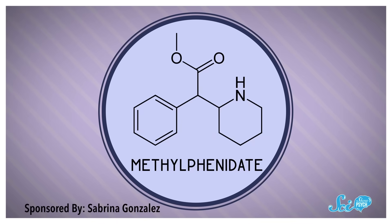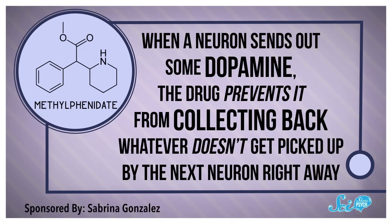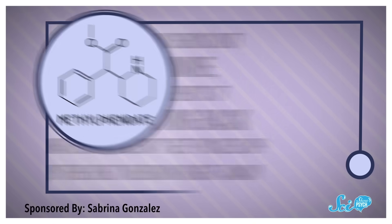Methylphenidate is a dopamine reuptake inhibitor, which means that when a neuron sends out some dopamine, the drug prevents it from collecting back whatever doesn't get picked up by the next neuron right away.